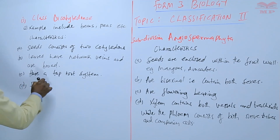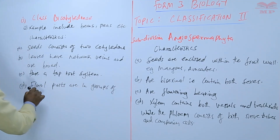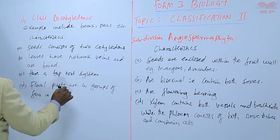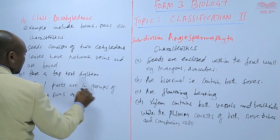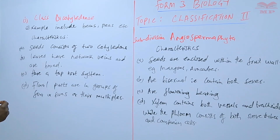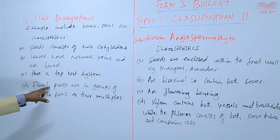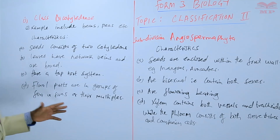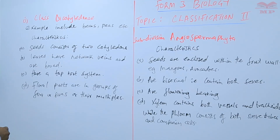In terms of the flowers, the floral parts are in groups of fours or fives, or they are multiples of four or five. So we can have five petals or four petals, four sepals or five sepals — those are the floral parts.